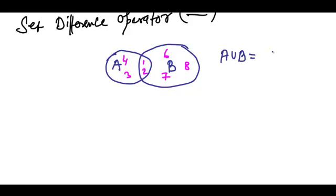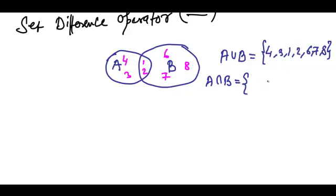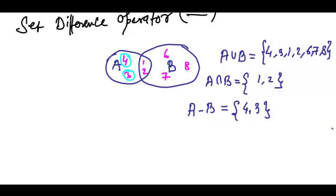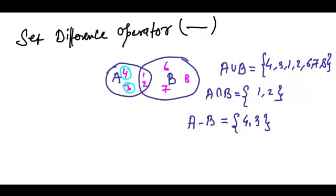Let's revise union and intersection as well. A union B is 4, 3, 1, 2, 6, 7, and 8. A intersection B is what is common between them, which is 1 and 2. Now, A minus B is all the elements which are in A but not in B — so we have 4 and 3. A minus B would be 4 and 3.